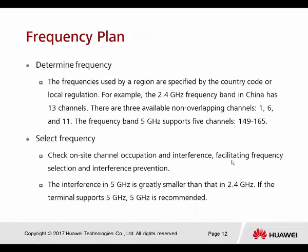For frequency band, the frequency used by region is specified by the country code and local regulation. For example, the 2.4 GHz frequency band in China has 13 channels, and there are only three available non-overlapping channels: 1, 6, and 11. The 5 GHz frequency band supports channels 149, 153, 157, 161, and 165.